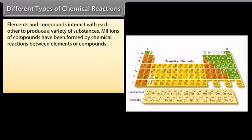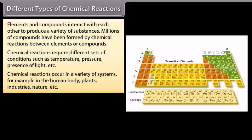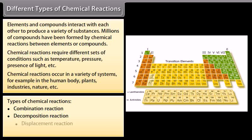Different types of chemical reactions: Elements and compounds interact to produce a variety of substances. Millions of compounds have been formed by chemical reactions. Chemical reactions require different conditions such as temperature, pressure, and presence of light, and occur in a variety of systems — in the human body, plants, industries, and nature. The types include: combination reactions, decomposition reactions, displacement reactions, and double displacement reactions.